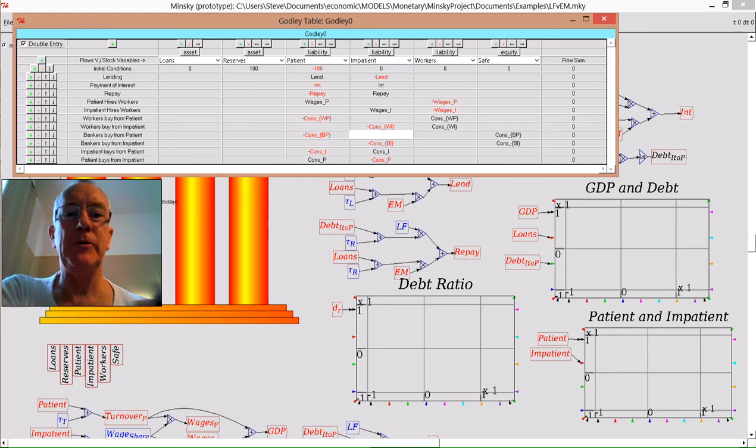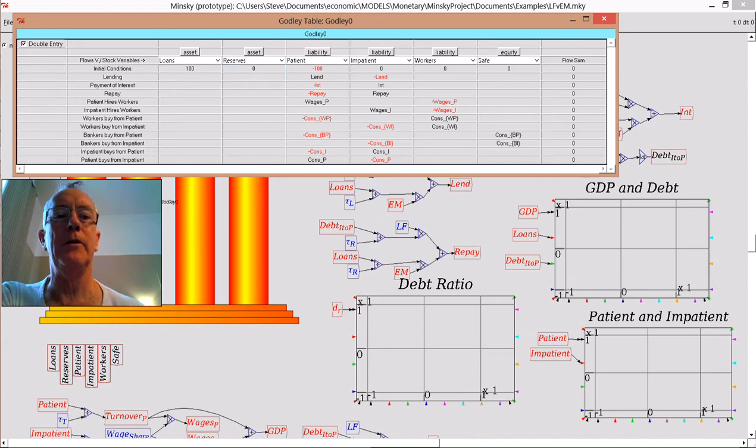Now let's go from loanable funds to endogenous money in five simple keystrokes. First of all, the amount of money in the accounts comes from lending created by the bank rather than being deposited in reserve.